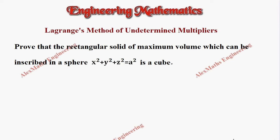Hi students, this is Alex here. In this video, we are going to use Lagrange's method of undetermined multipliers to prove that the rectangular solid of maximum volume which can be inscribed in a sphere of equation x² + y² + z² = a² is a cube.